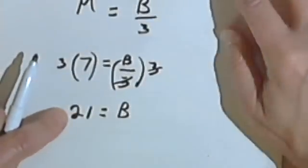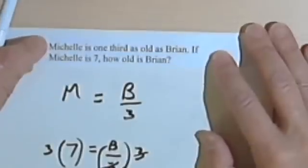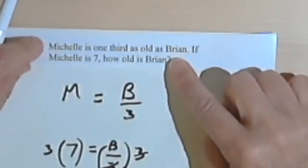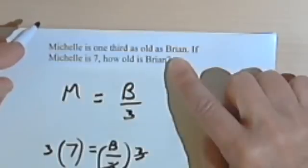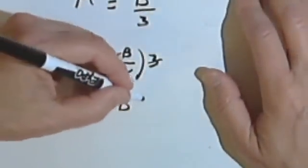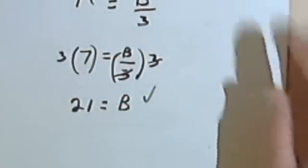And again, you can make sure that checks. Michelle is one-third as old as Brian. Well, if Brian is 21, one-third of Brian's age, one-third of 21 is 7, and that's how old Michelle is. So this answer is okay also.